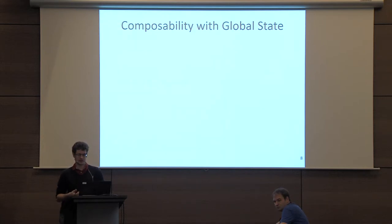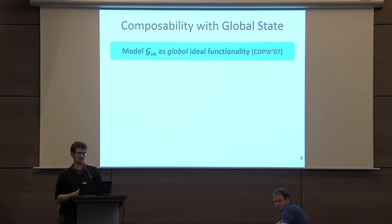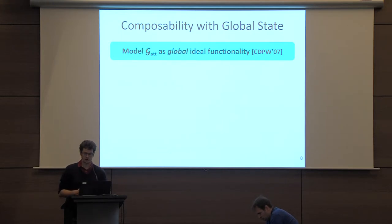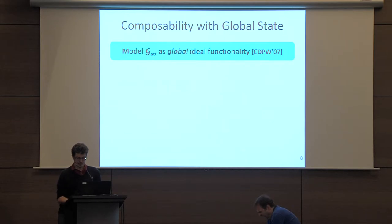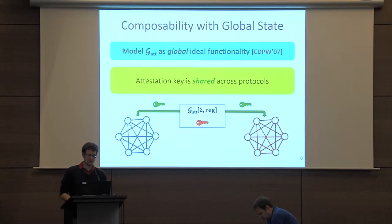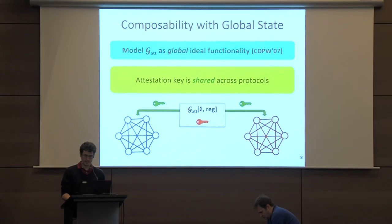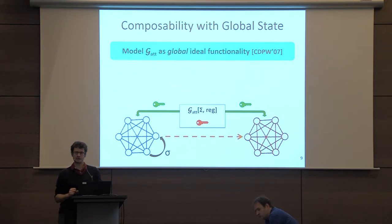We model this attested execution ideal functionality in the UC framework. Trusted hardware is probably not going to be used in isolation — it will be part of larger protocols — and modular composition is a desirable property when proving security of systems in this space. We use the generalized UC framework because these attestation keys are inherently shared across protocols, since the way the system is set up in practice, all platforms inherently share state in this sense. This means attestations produced in one run of a protocol have a lifetime that goes beyond that particular protocol.